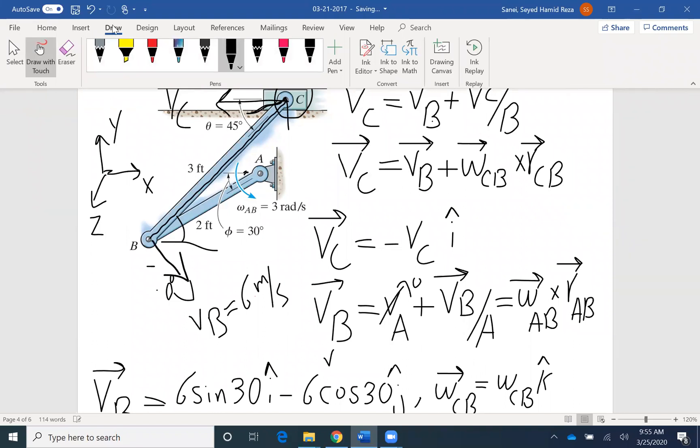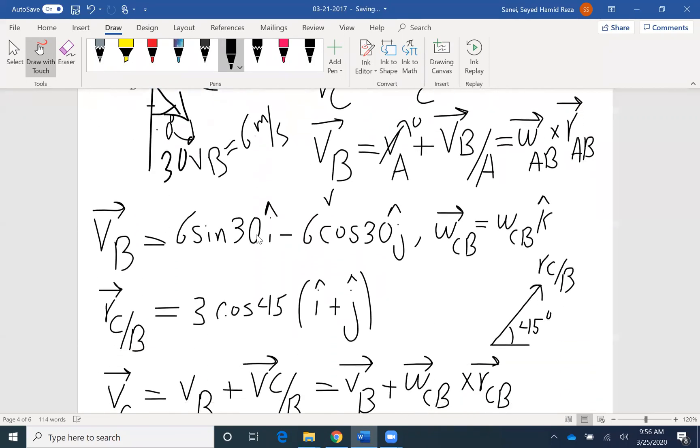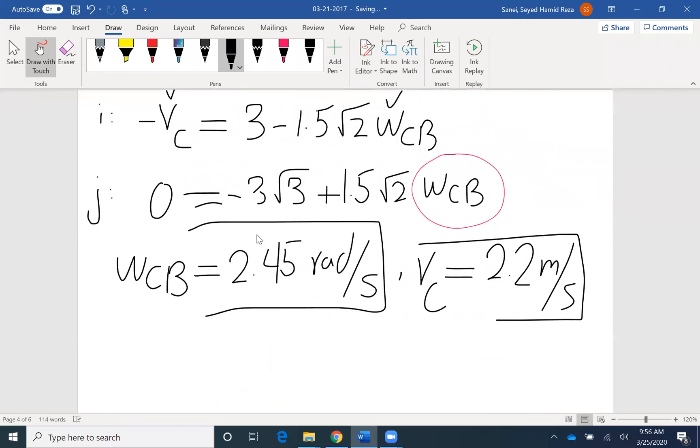Or we could write VB cross omega AB cross RBA. And that's the vector formulation. So you could use both approaches, and I recommend that you try both to see that you get the same answer.